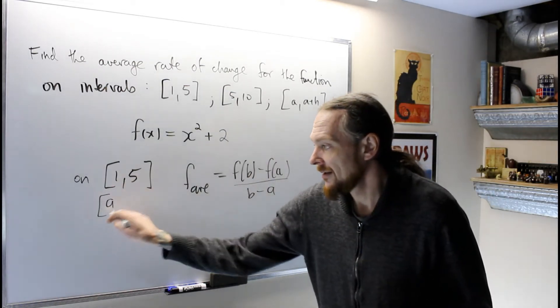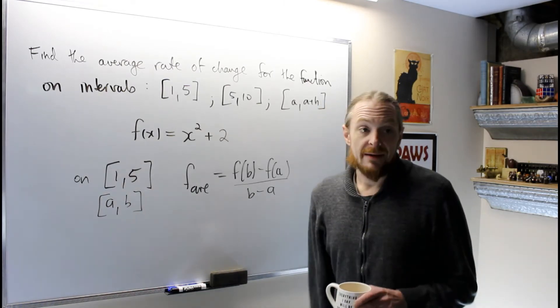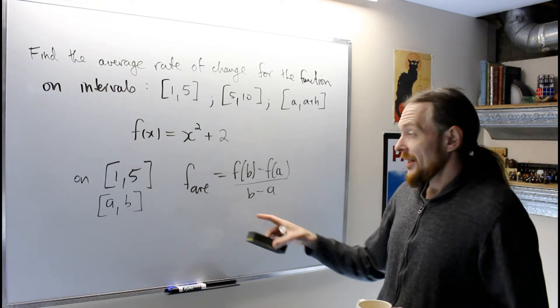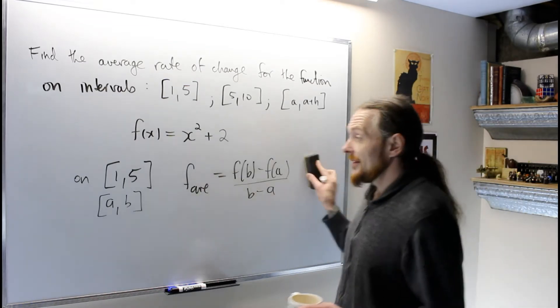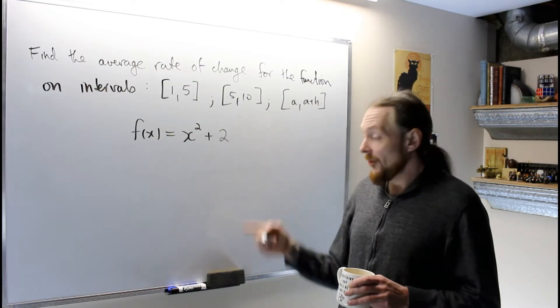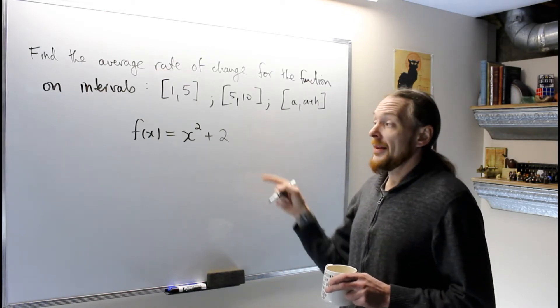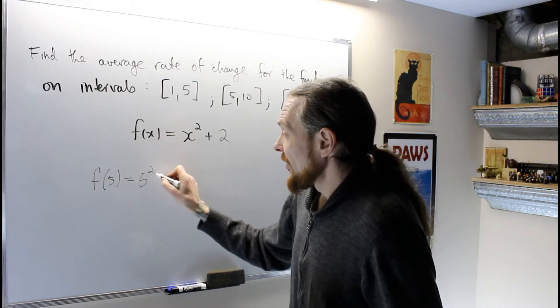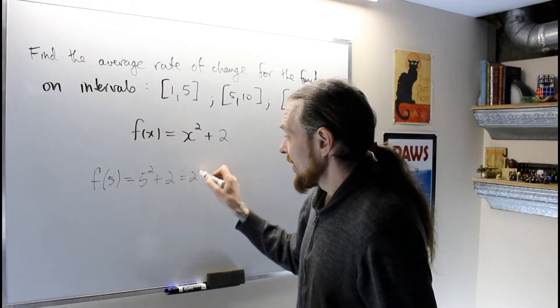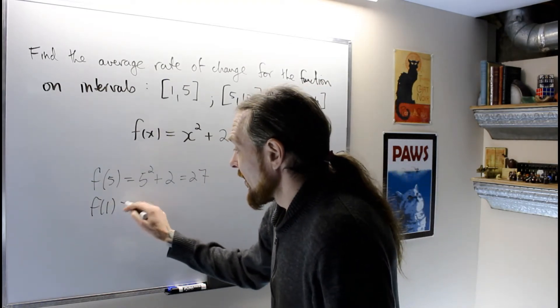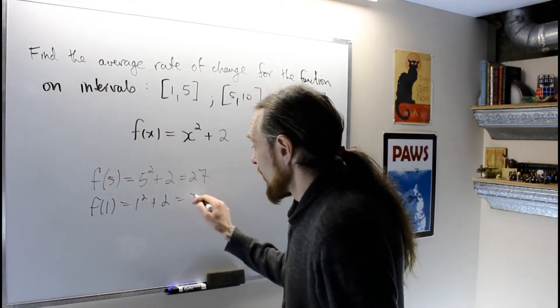This is a, and this is b—that's what you have to sort out. Once I know the formula for f average, I take my function and build the pieces before I put it into the machinery and calculate. So f(5) is 5² + 2, which is 27. And f(1) is 1² + 2, which is 3.